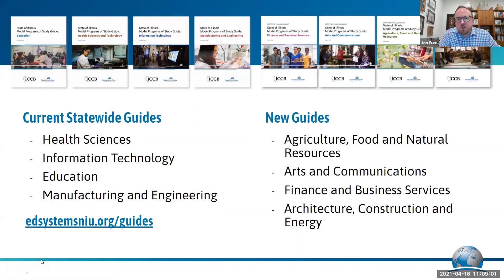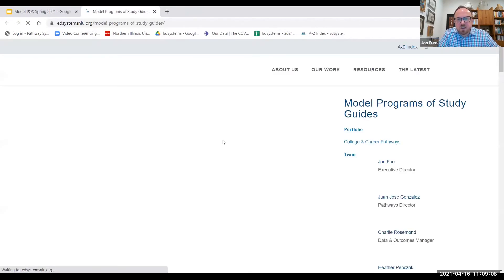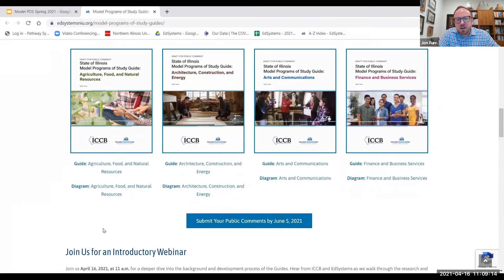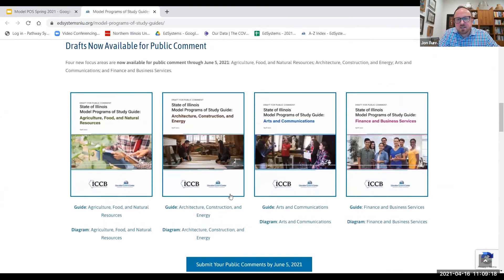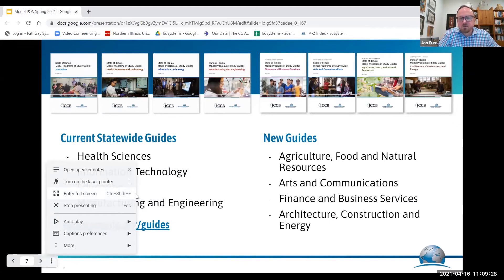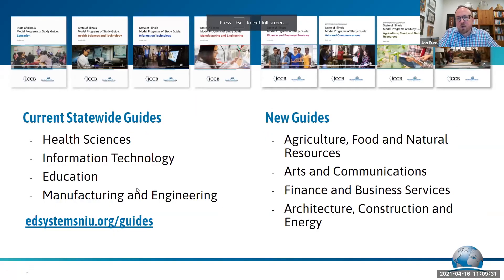On the website, there are four guides that have been finalized and published — these fully went through the public comment and review process earlier in the year. We now have four new guides being released today. They are labeled 'draft' and are being put out for public response and comment. As we receive public comment through this period, we'll incorporate that feedback and look to finalize them within the next few months. Across all eight guides, they cover all the various career clusters that are part of the Perkins V program of study areas.